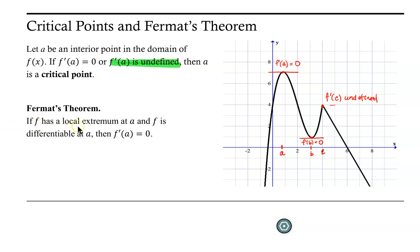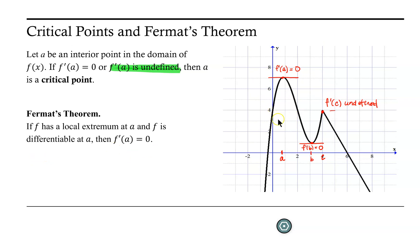Now, if f has a local extremum at a and f is differentiable at a, then f′(a) is zero. Let's see how this applies to this function. At a, f does have a local extremum — it has a local maximum. It's a nice smooth curve, and the slope of the tangent line is well defined at all points on the curve. So at a, it is true that there is a local extremum and it is true that f is differentiable at a; therefore we know that f′(a) is equal to zero.